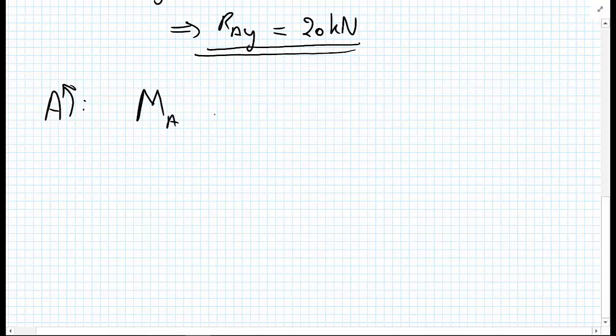And then I have my 20 kilonewtons multiplied by 10 meters, and the sum of the forces must be equal to zero. And the 20 times 10 is going in a clockwise direction, so that is negative.